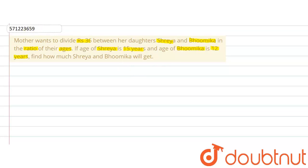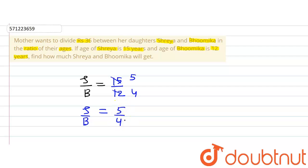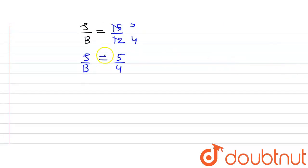First of all, let us find out the ratio of the ages of Shreya and Bhumika. Let's denote the age of Shreya by S and age of Bhumika by B. Shreya's age is 15 years and Bhumika's age is 12 years. On dividing both by 3, we get 5 divided by 4. So Shreya to Bhumika is equal to 5 to 4. This is the ratio of their ages.